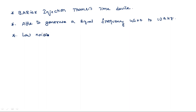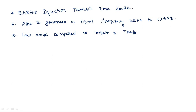The main advantage of this BARITT diode is very low noise compared to the remaining two diodes explained before — the IMPATT diode and the TRAPATT diode.